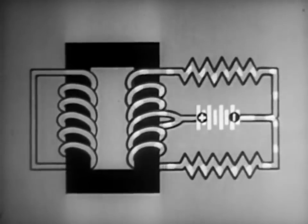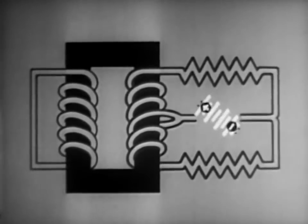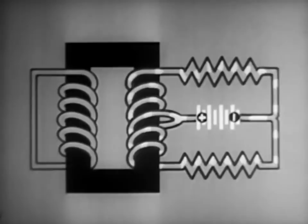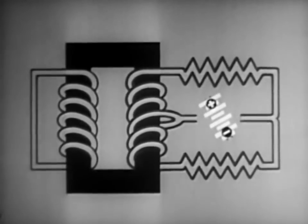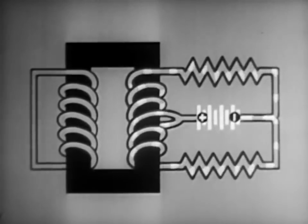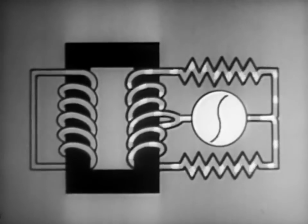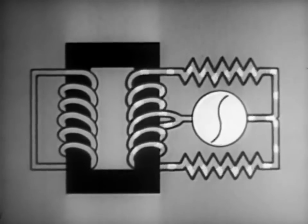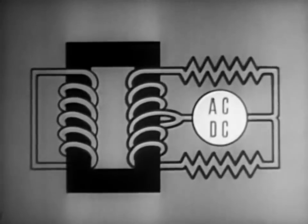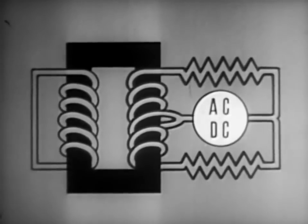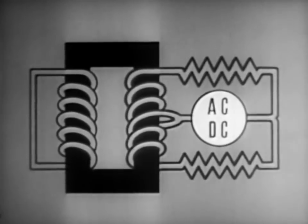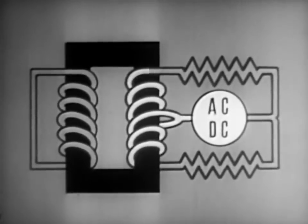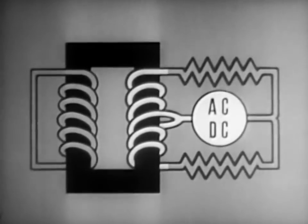Consequently, no current is induced in the second winding, even when the current in the first winding is changing. Therefore, the same principle applies to alternating current. This is the third and most important operating principle of the repeating coil. When either alternating or direct current is introduced at the midpoint of one winding and is made to divide equally between the two halves, no effect is produced in the other winding.